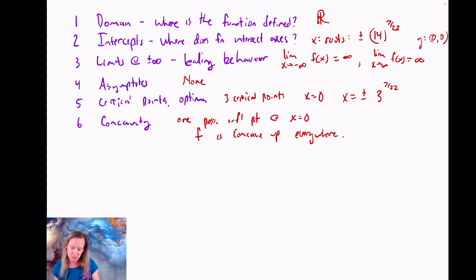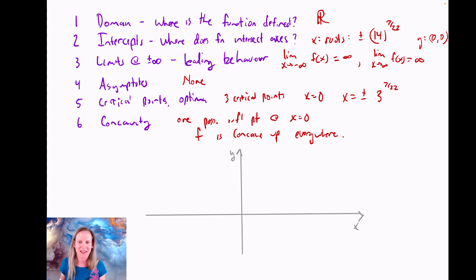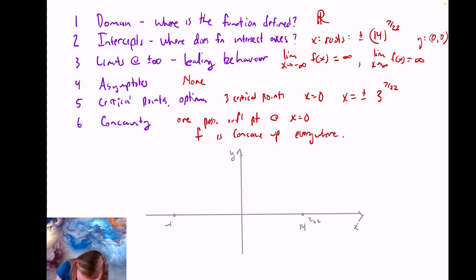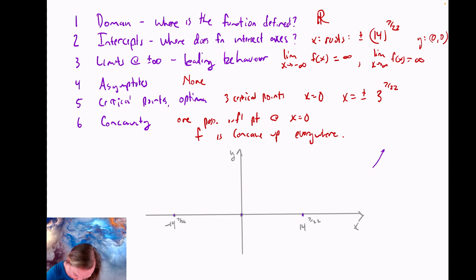Let's draw some axes and use these six pieces to do the sketch. A good scientist labels their axes. For the intercepts, I've got 14 to the seven over 22 and minus 14 to the seven over 22, and (0, 0). So I know my function passes through those three points. The limits at infinity tell me the function is going off to infinity in both directions. As for asymptotes — none — so nothing to sketch there; there's no hard wall that it can't pass.